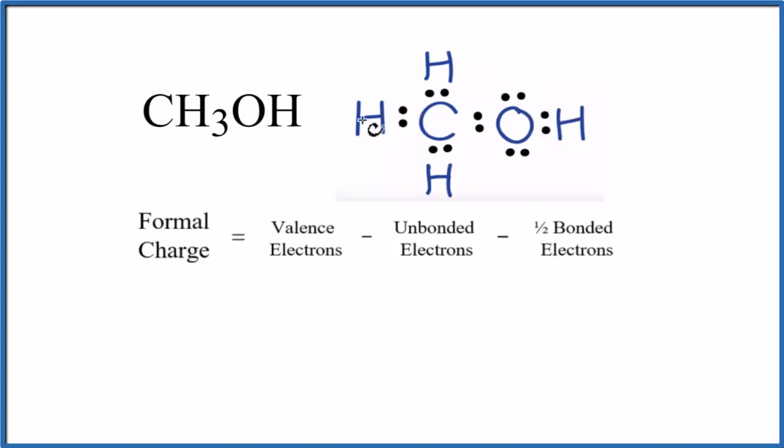So let's do the hydrogen first. Hydrogen, group 1, has one valence electron, subtracting the unbonded. All these electrons here are involved in a chemical bond, so 0 unbonded. And then one half of the bonded, these two right here. So 1 minus 0 minus 1, that gives us a formal charge of 0. So the formal charge on each hydrogen is 0.